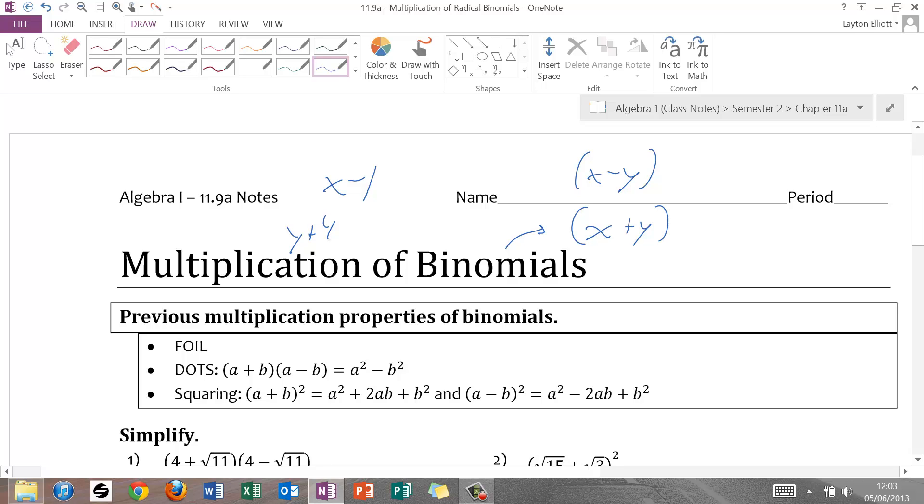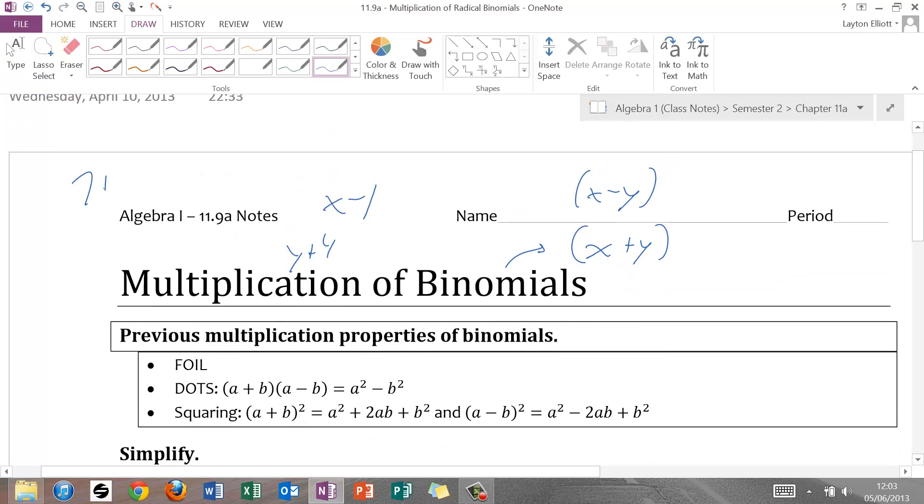In the context of radicals, binomials are just kind of a number in a radical that you add that can't be simplified. So something like 7 plus radical 3, I can't simplify that. And it's a binomial because there are two terms.